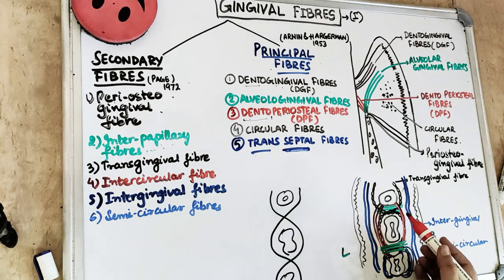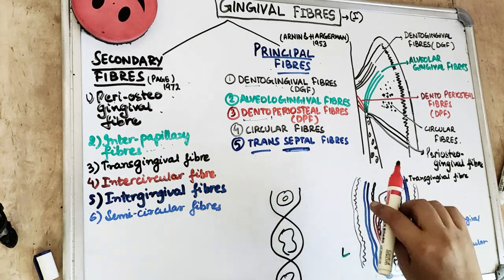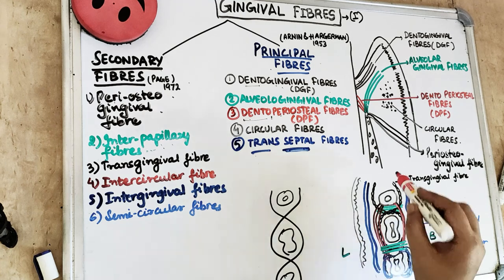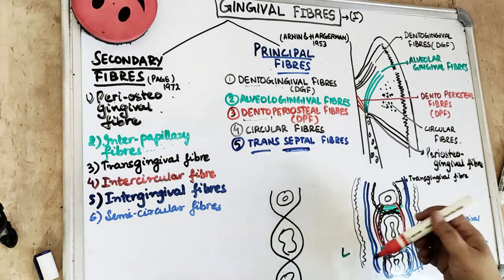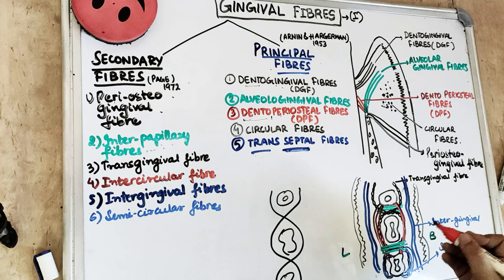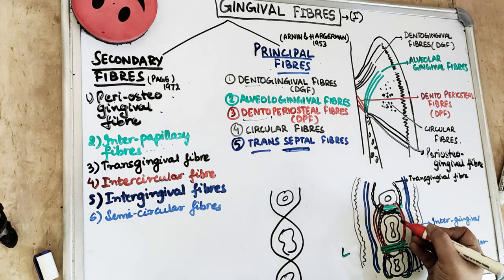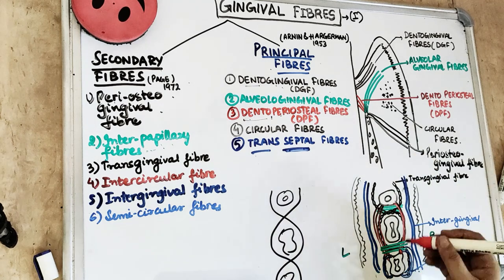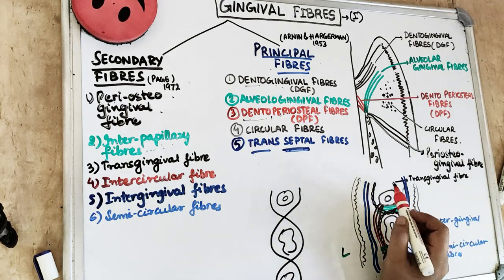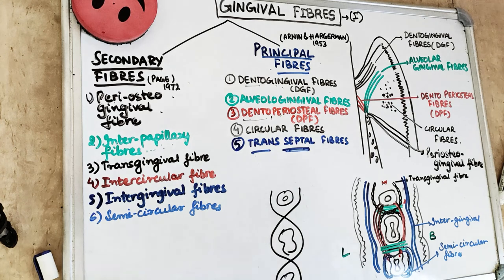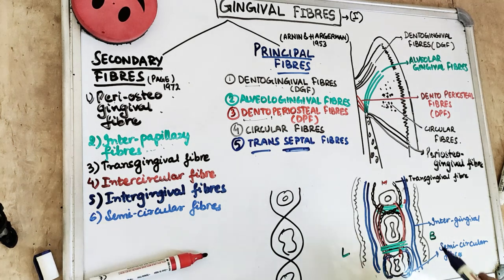The inter-circular fibers are arranged in a circular manner. They arise from the cementum on the distal surface of one tooth and extend on both the buccal and lingual sides, embedding into the mesial surface of the tooth next to the adjacent tooth — not the adjacent tooth itself. So they are inter-circular fibers connecting the distal surface of one tooth to the mesial surface of the next-to-adjacent tooth.